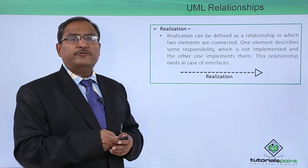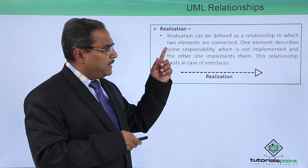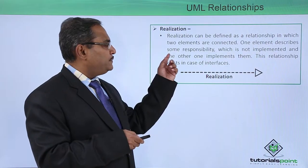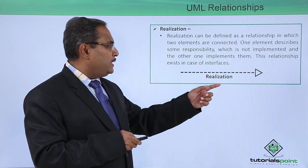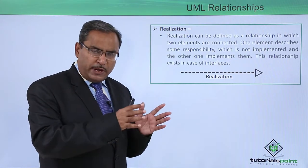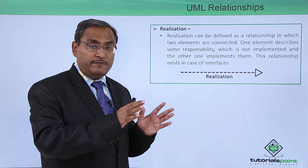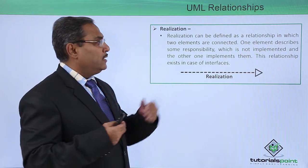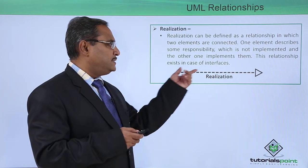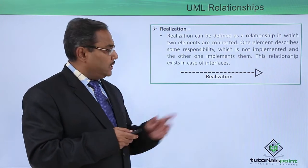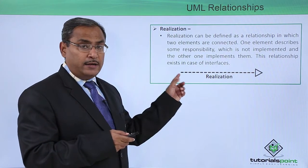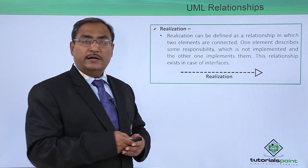Next is realization. Realization can be defined as a relationship in which two elements are connected: one element describes some responsibility which is not implemented, and the other one implements them. This relationship exists in the case of interfaces. It is denoted by a hollow arrowhead with a dotted inner line, distinguishing it from generalization.